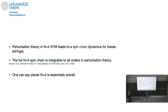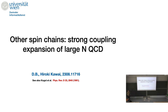One can say that planar N=4 is essentially solved in some sense. So the question is, strings show up as spin chains from the point of view of gauge theory. I'm going to tell you about another spin chain that shows up, and this time it's the strong coupling expansion of large-N QCD on the lattice. This is based on a recent paper I wrote with Rocky Kawaii, one of my students. The first paper that did this was in 1981, Kogut and collaborators.